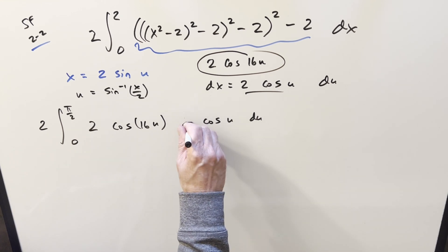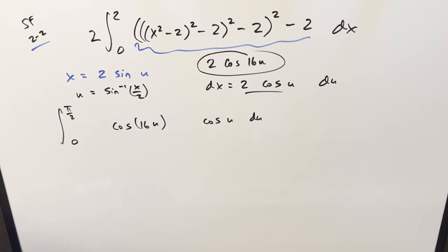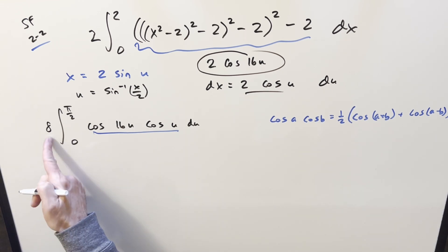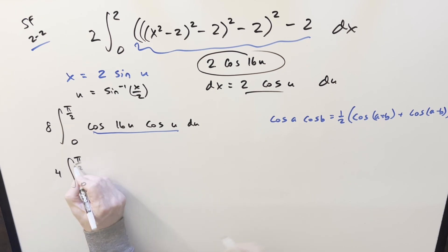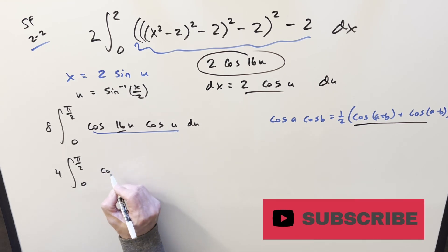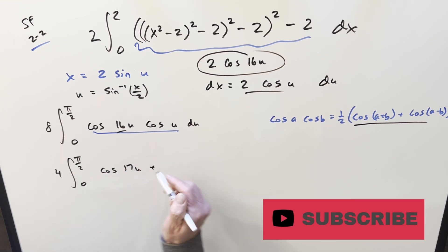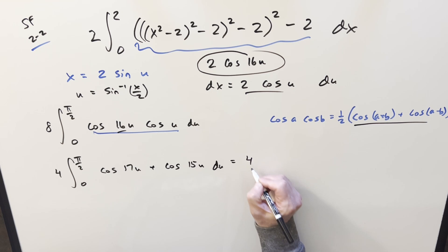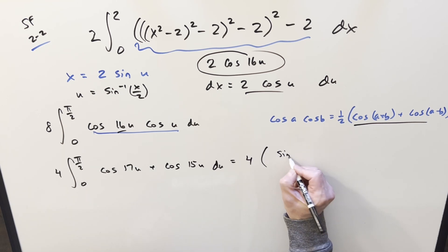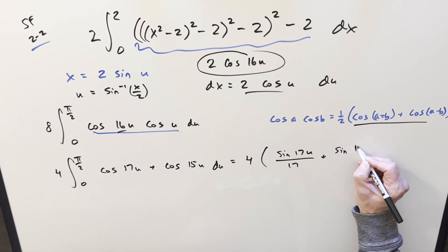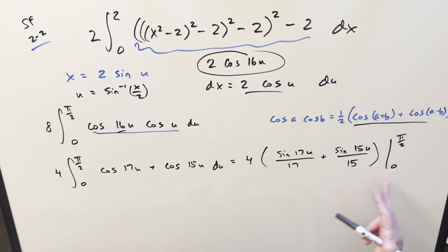Let's collect all the constant values: 2 times 2 times 2 equals 8 out front. Then I'll use the product-to-sum formula for cosine, which brings a half out front — so 8 times one half gives 4. Adding and subtracting the angles: 16u plus u gives cosine 17u, and 16u minus u gives cosine 15u. Integrating: we get four times sine 17u over 17 plus sine 15u over 15. Plugging in zero, sine of zero gives zero.